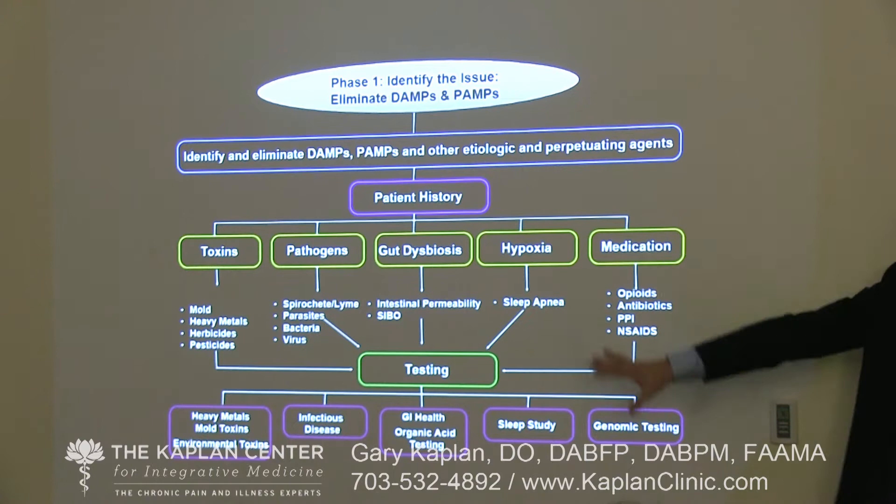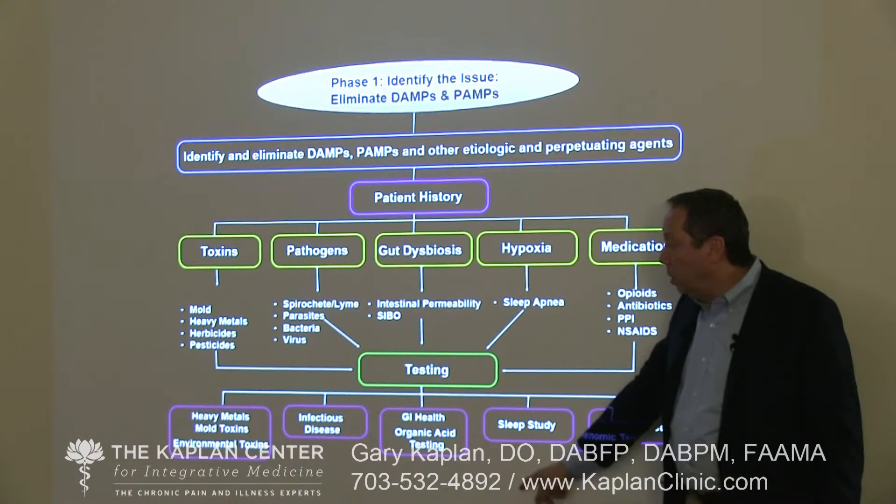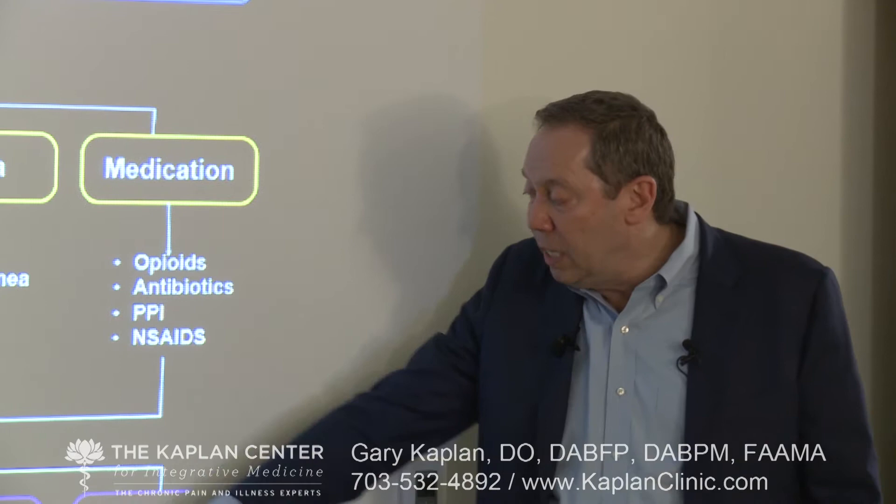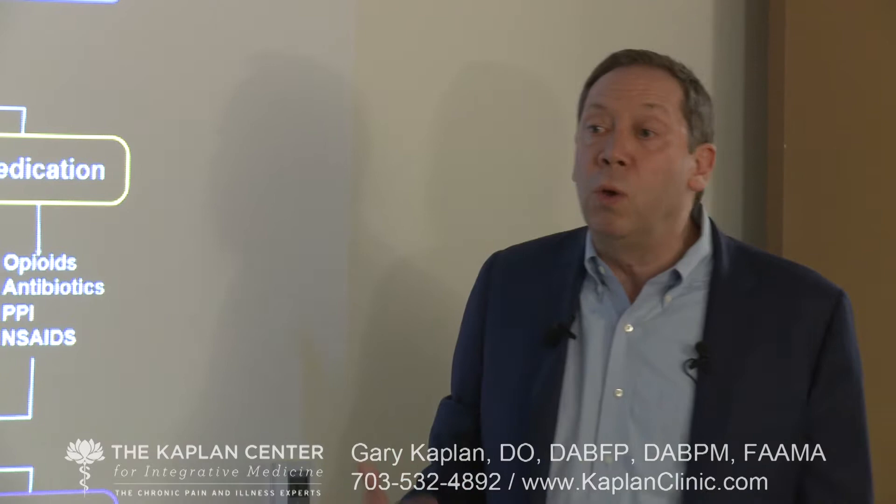Knowing what we know from the physiology guides our history, and that guides our testing. We can look for heavy metals, mold toxins, and other environmental toxins. We can look for infectious diseases, the health of the gastrointestinal system, sleep studies, and genomic testing — because when you get people who come to you and tell you they've taken 15 different medications and haven't reacted properly, probably they're not metabolizing them.